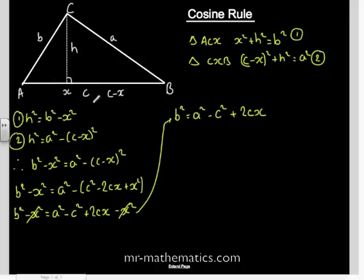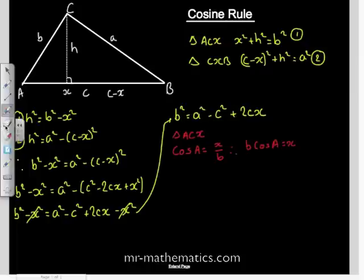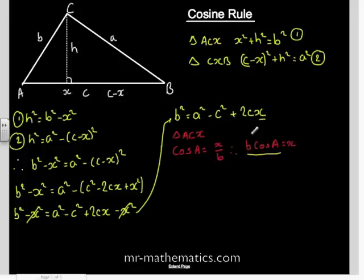We are going to write X in terms of what we already know about the triangle. In triangle ACX, the cosine of angle A equals the adjacent side X over the hypotenuse B, so B cos A equals the length X. Substituting back gives B squared equals A squared minus C squared plus 2BC cos A.